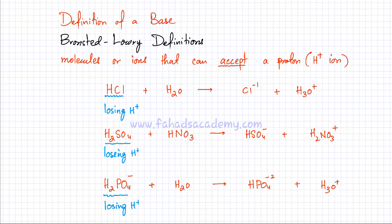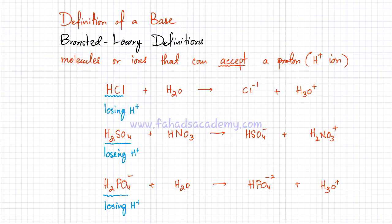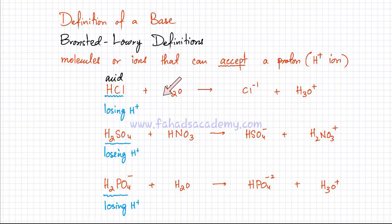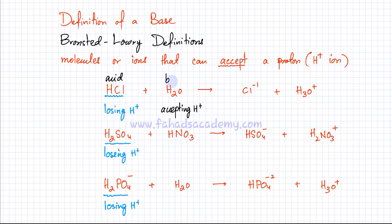Let's revisit the reactions discussed previously. In the reaction where HCl reacts with H2O to produce Cl-1 and H3O+1: we said HCl lost its H+1 ion, making it the Bronsted-Lowry acid. Now, looking again at the same equation, we ask which substance is accepting the H+1. That is water — H2O gains an H+1 ion to form H3O+. So the substance gaining or accepting H+ is your Bronsted-Lowry base.